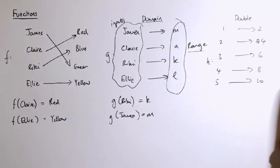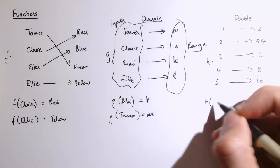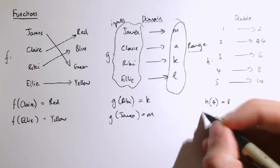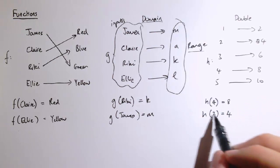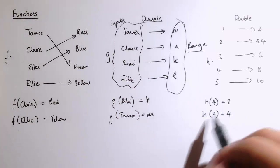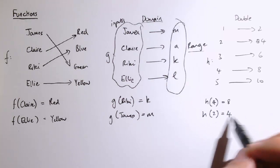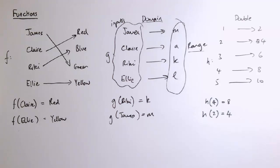Maybe I'll call this function h. So we've got h of 4 is equal to 8 and h of 2 is equal to 4. This just means the number doubled is 4. So the thing in brackets is what's going into the function. And over here we're getting the output of the function.